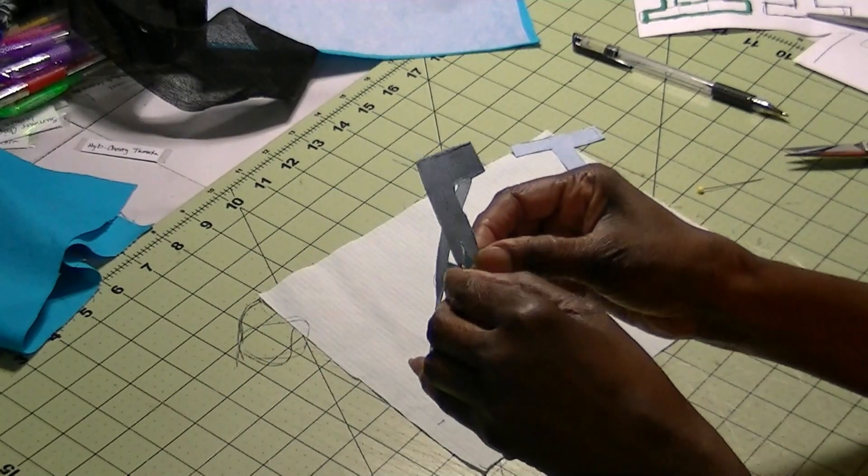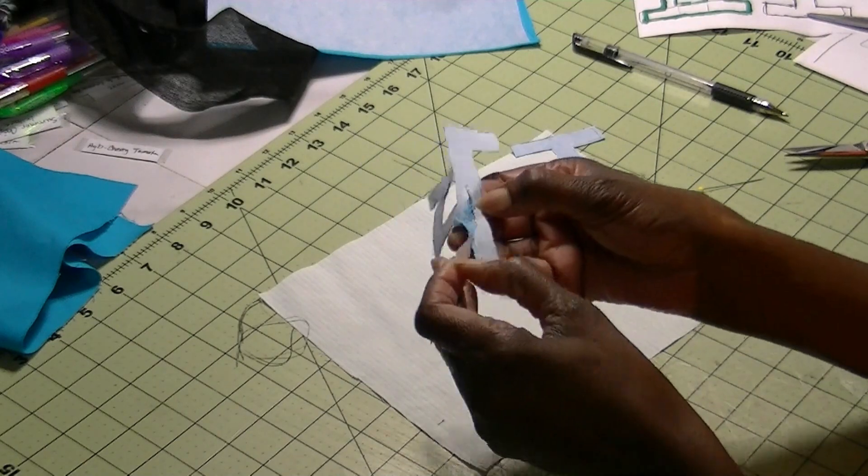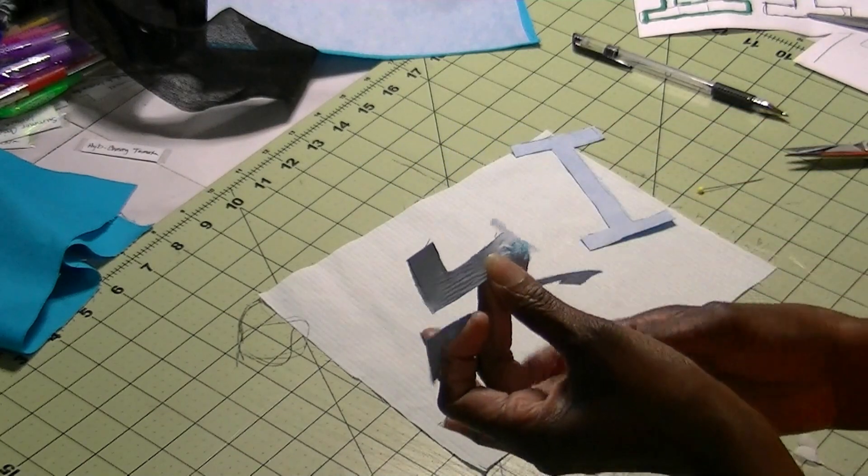So once it scratches, then you can just peel it off. You can just peel all the paper off.